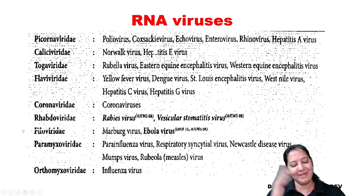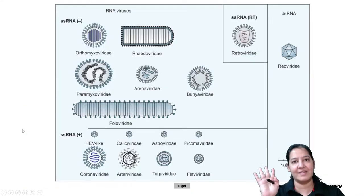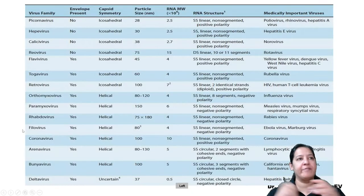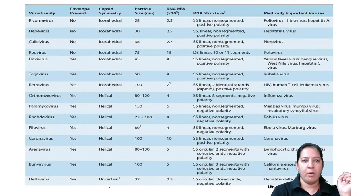Let me tell you the names of the RNA viruses. There is a mnemonic for the 14 RNA viruses. The mnemonic is: A, B, C, D, F (not E) - then P, H, C, O, R, F, T. With P2 and R2 since there are two P's and two R's.